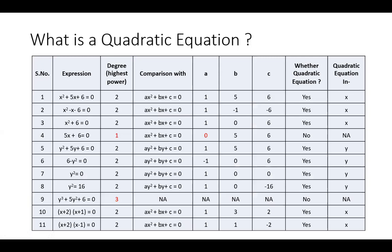Now we have some examples to identify whether any particular algebraic expression is a quadratic equation or not. The first one is x² + 5x + 6 = 0. How do we know it is quadratic? The highest power must be 2. The coefficient of x² here is 1, which is not zero. Therefore it will be a quadratic equation.